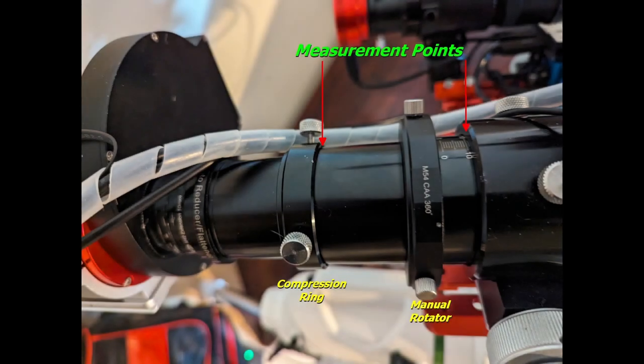So this is the back end of my telescope, it's a 102 F7 refractor and this is my focuser set out 5,000 steps at the moment. As you can see the compression ring, I have a manual rotator currently located there.